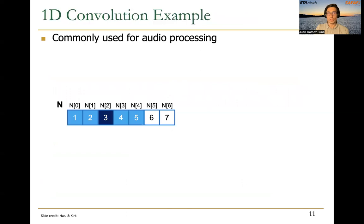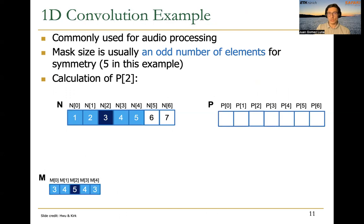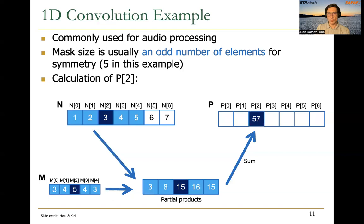Let's start with a 1D convolution example that is commonly used in audio processing. Here we have our input — imagine that this is an audio record composed of many consecutive elements. We have a mask that we are going to apply; the mask usually has an odd number of elements, five in this example. To calculate output element P2, we put the mask on top of the element for which we want to calculate the output, perform partial products via element-wise multiplication — for example, 3 multiplies 1, 4 multiplies 2 — and the partial products are later reduced. The resulting value, 57 in this case, is stored in the corresponding element of the output.